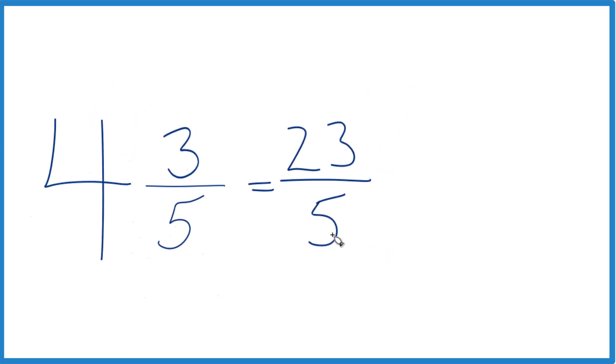You can even check your work here, because 5 goes into 23, 4 times, 5 times that would be 20 with 3 left over here. So we put the 3 here, bring the 5 across, we get 4 and 3 fifths. That's the mixed number we started with.